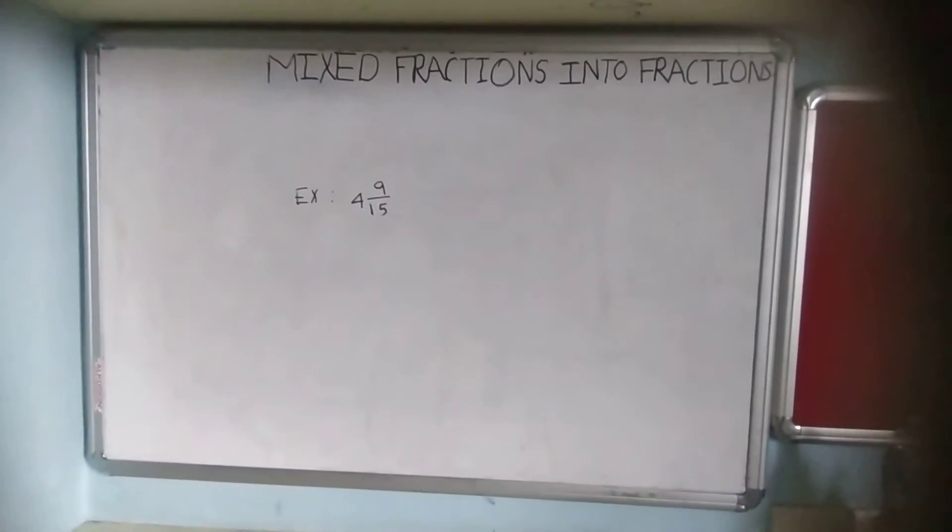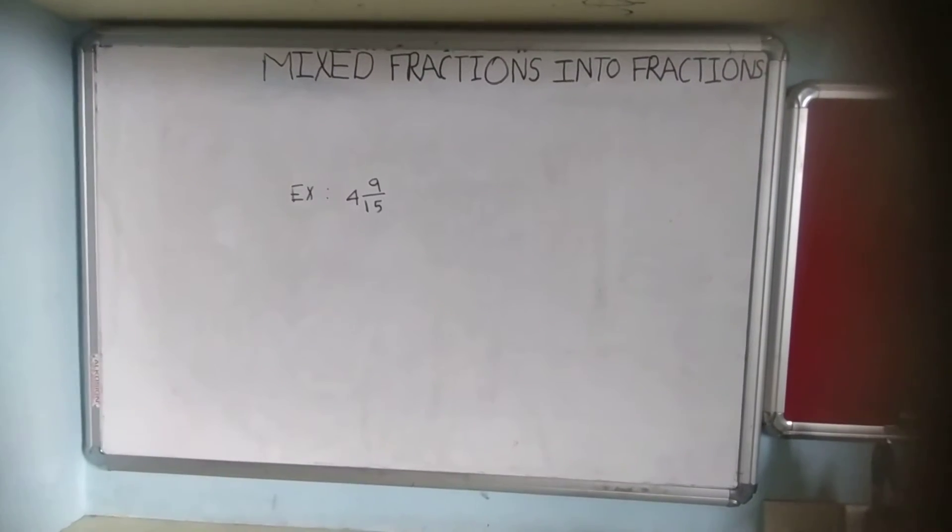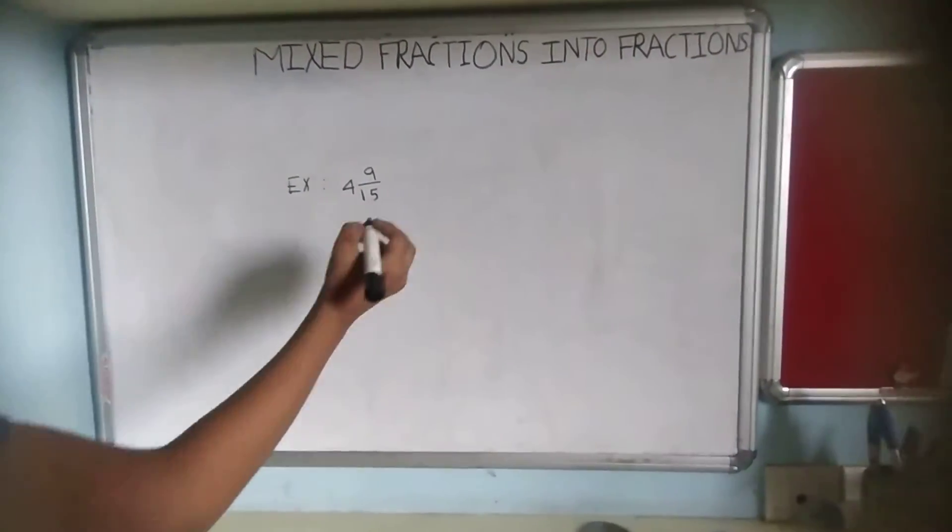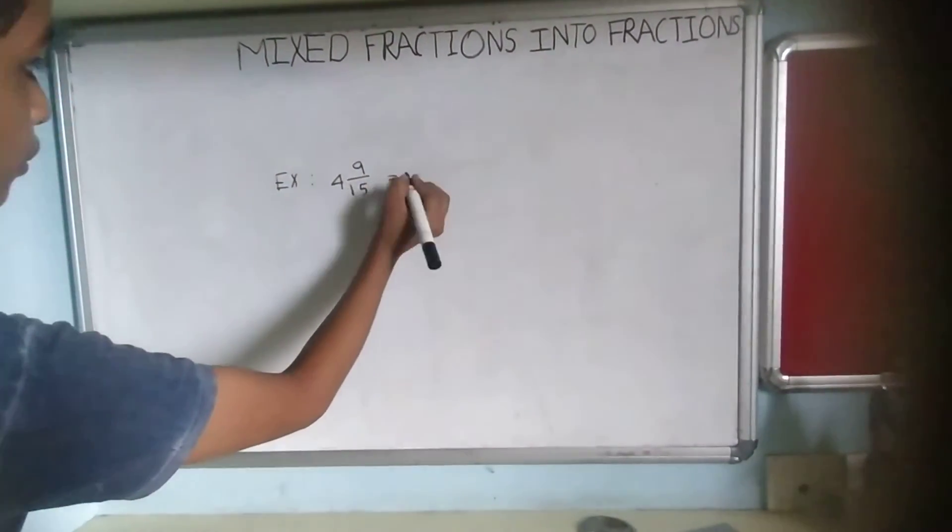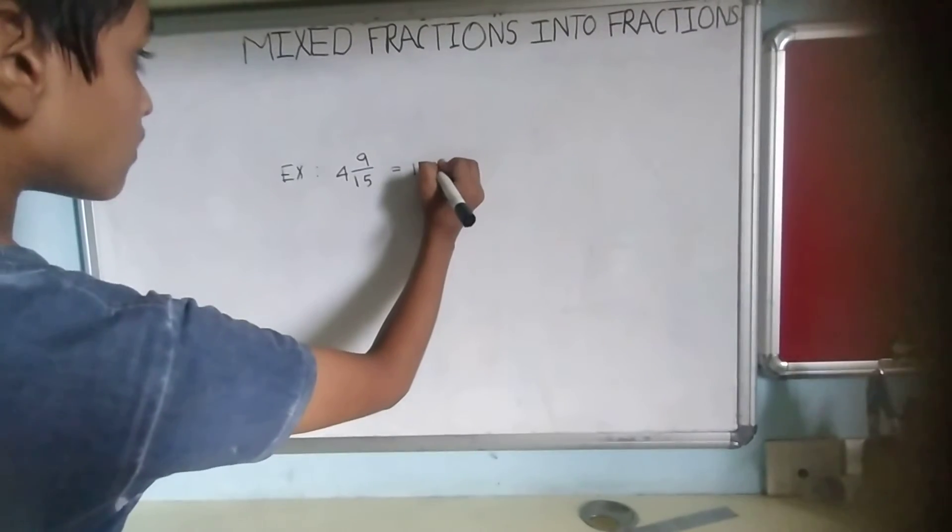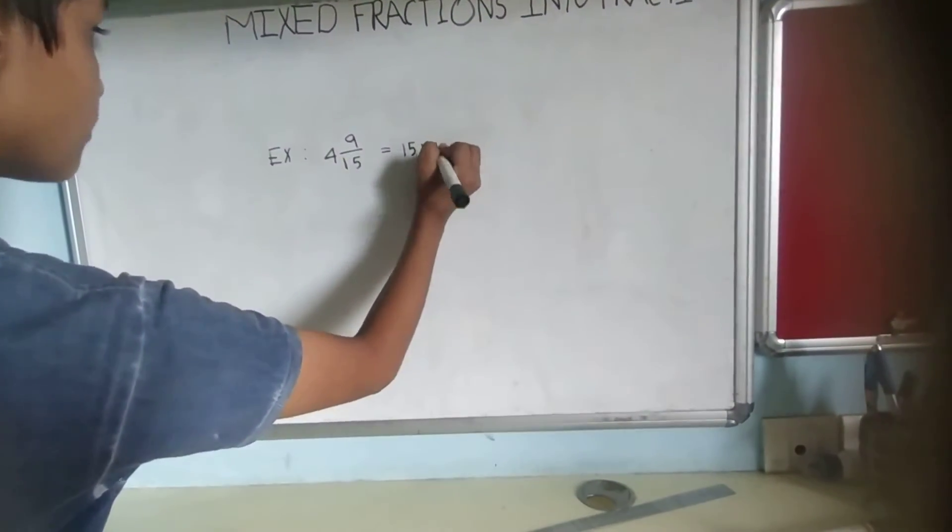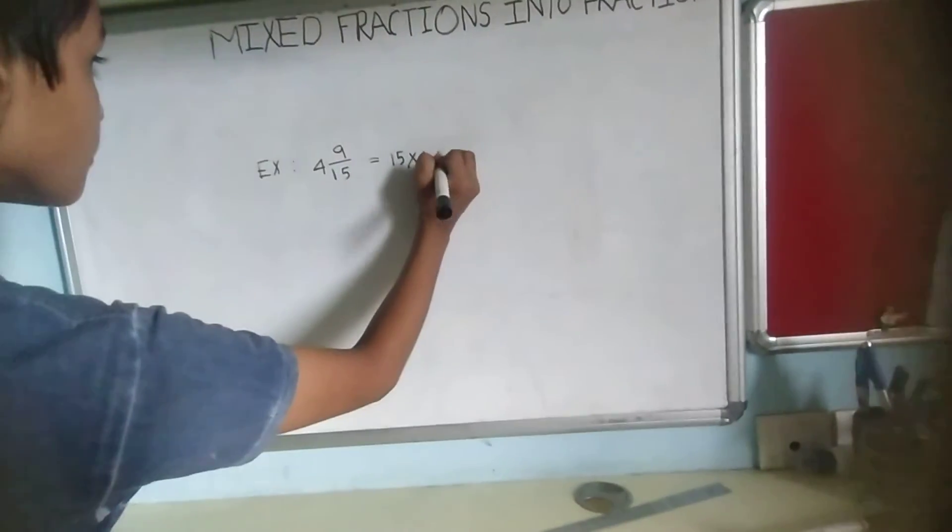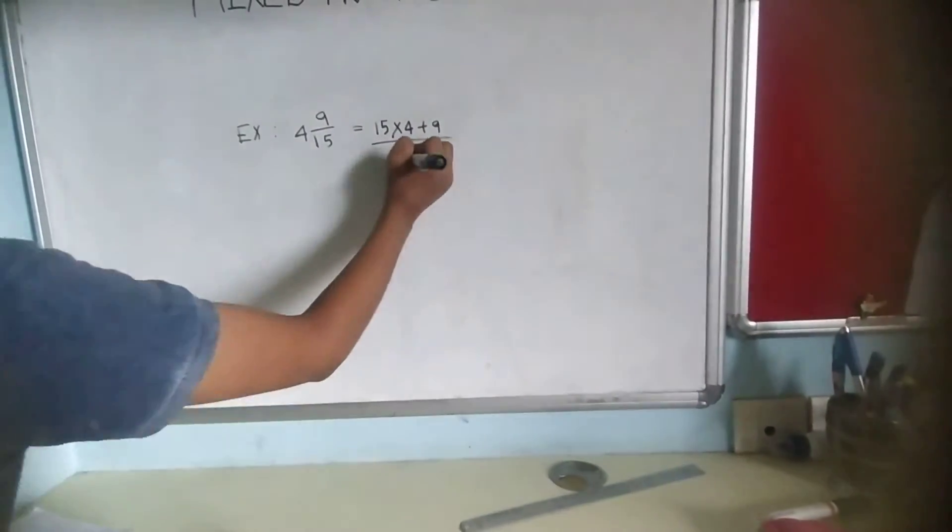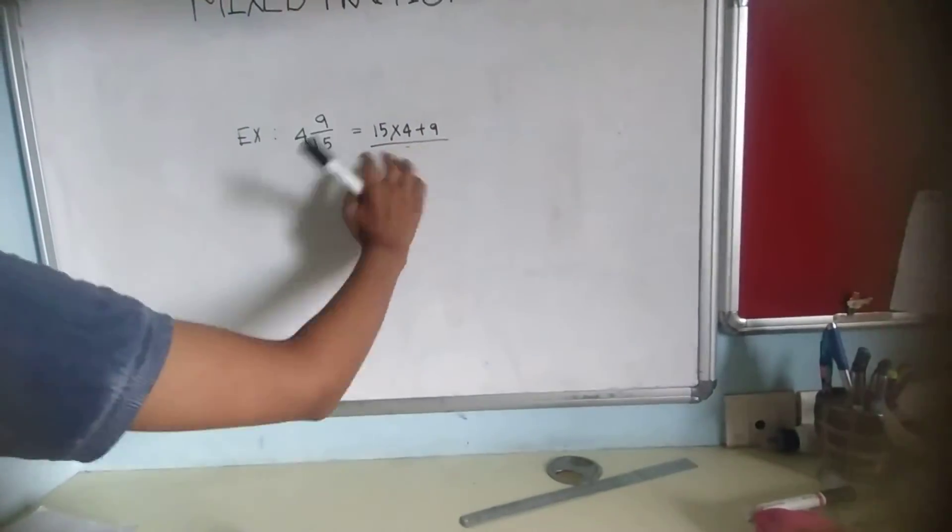Now our second example is 4 and 9 by 15. Now we will start. Now we will do 15 cross 4, which is 15 multiplied by 4 plus 9. Sorry, by 15.